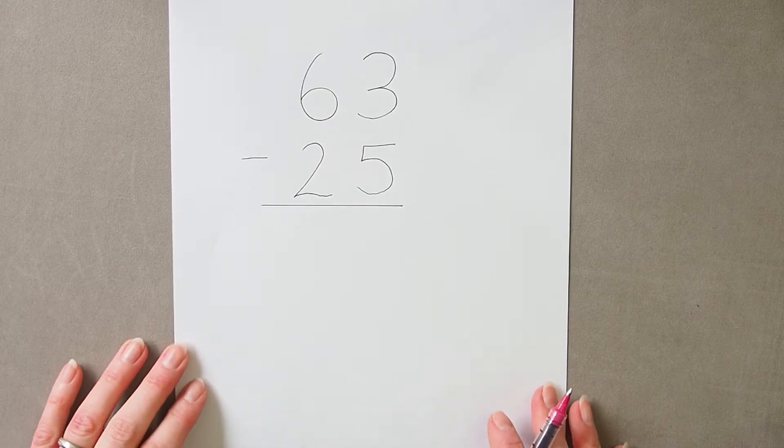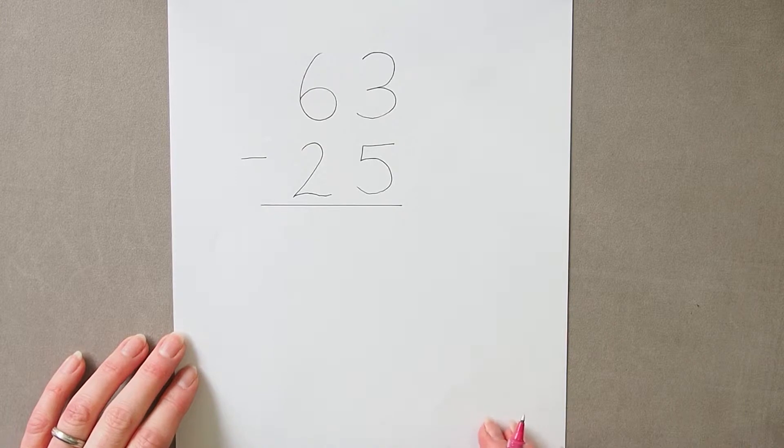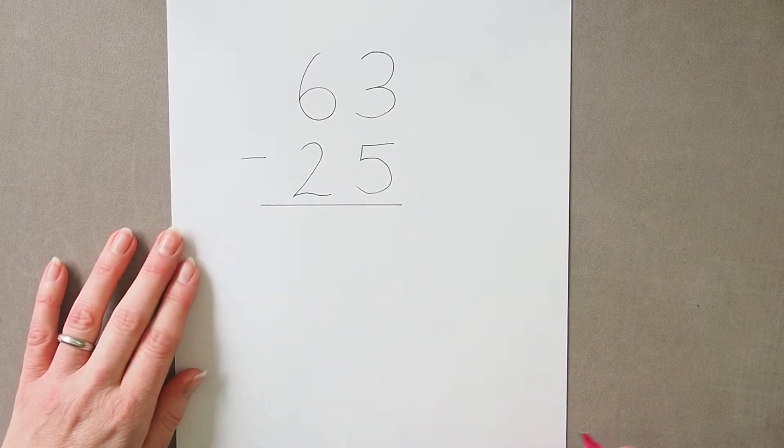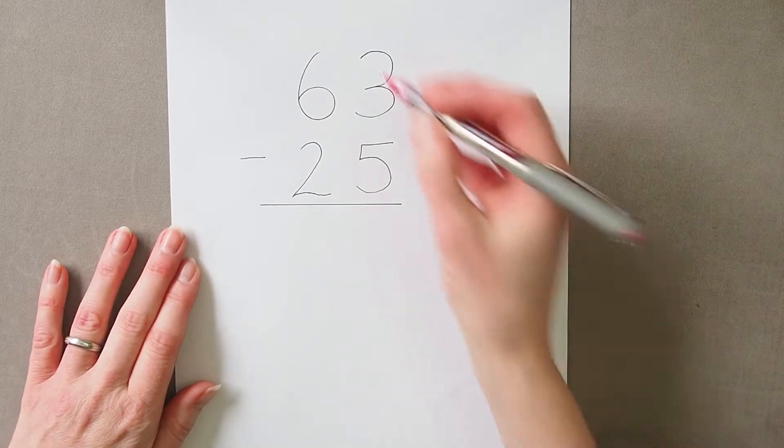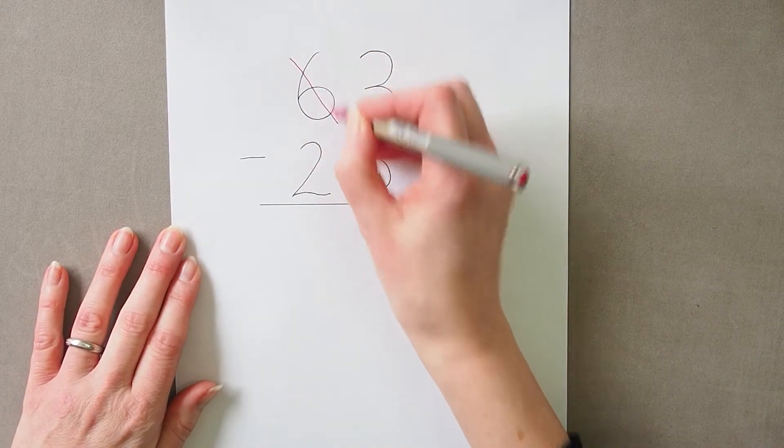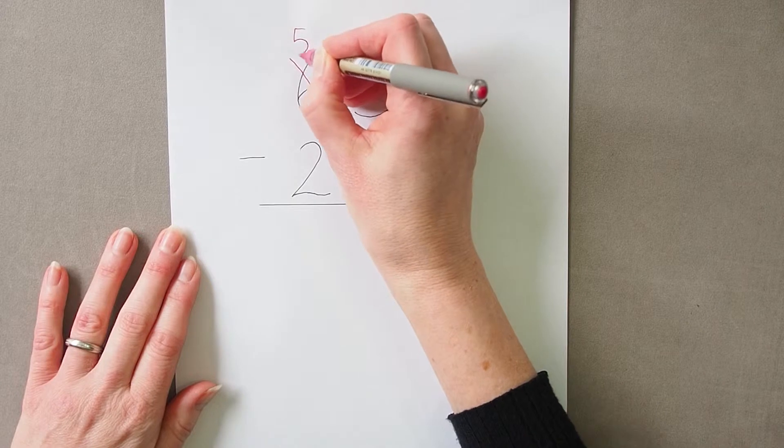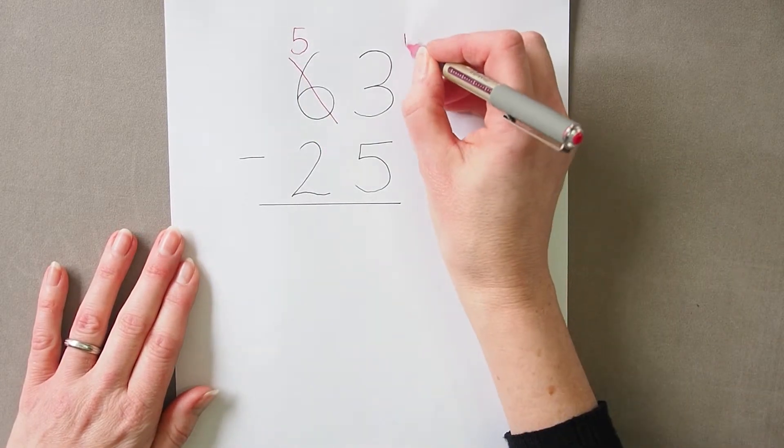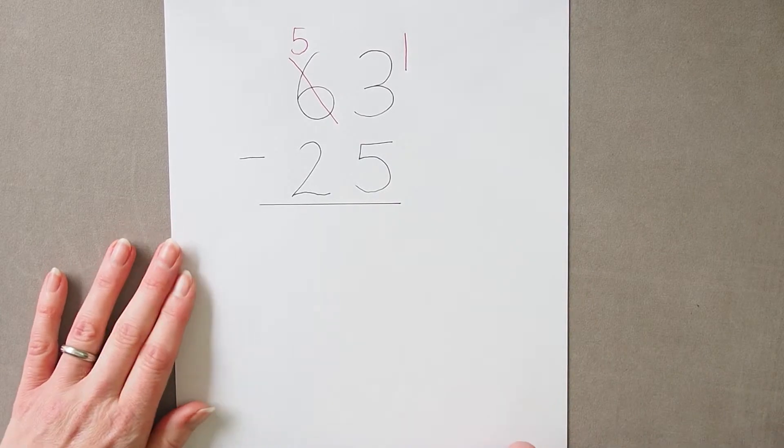So what can go wrong when we're exchanging tens in subtraction? The first mistake is for a pupil to exchange a ten, so take a ten out of the tens column, but actually just write it in the wrong place in the units column.